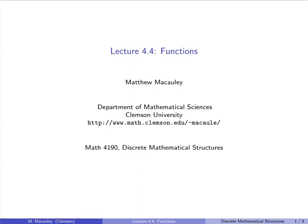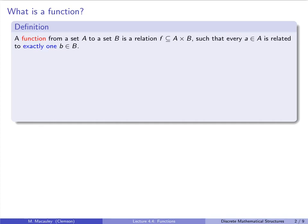Welcome to lecture 4.4: Functions. Let's begin by formally defining a function. We all know what a function is intuitively from grade school — we had silly little criteria like the vertical line test. I'm going to define it using the concept of a binary relation. A function from a set A to another set B is a binary relation — a subset of A×B — such that every element a in A is related to exactly one element b in B.